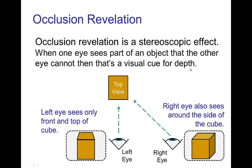Another effect that appears with stereoscopic vision is occlusion revelation. When we have two cameras or two eyes looking at a scene, an object may have parts which are seen by one eye but not by the other. If the left eye looks straight on at a cube, it only sees the front and the top, whereas the right eye — which is to the side — sees the front, the top, and the right side. When the brain receives these two different views, it uses that information to establish a sense of the position and depth of the object.